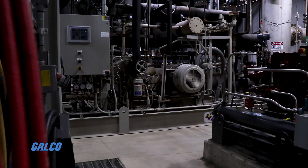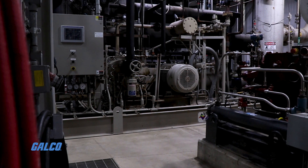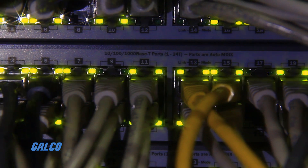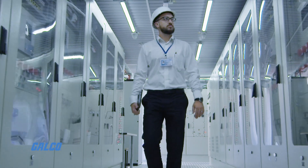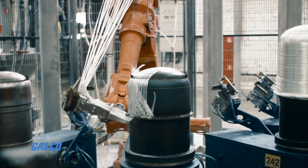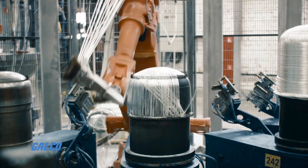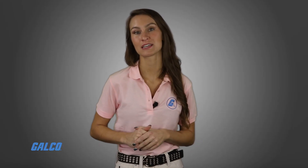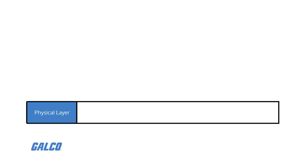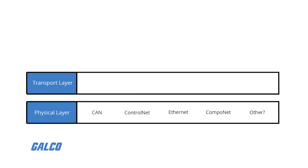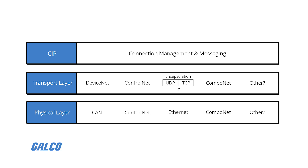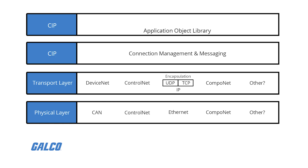Common Industrial Protocol is used by EtherNet/IP, DeviceNet, CompoNet, and ControlNet industrial network architectures. Where communication protocols like DeviceNet define the lower layers of an industrial network, like physical connection and data transfer instructions, the CIP manages the upper layers of the network.